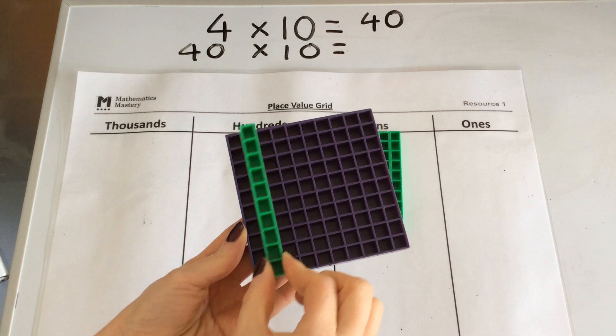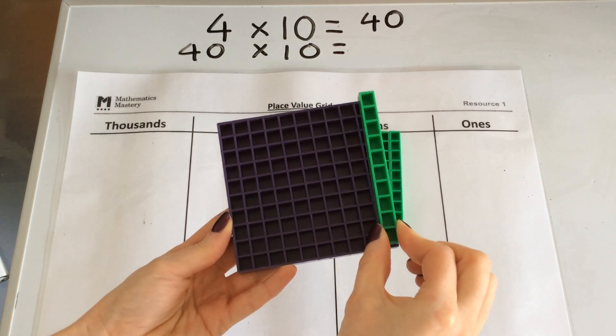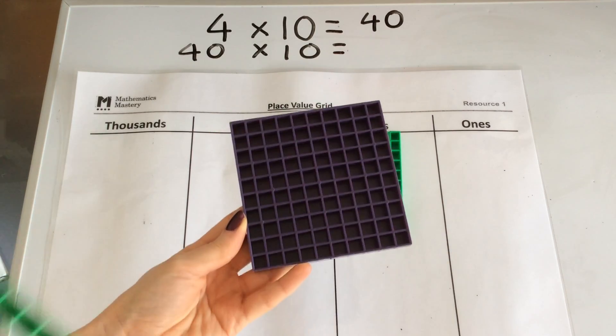1, 2, 3, 4, 5, 6, 7, 8, 9, 10. It's the same as 10 tens.